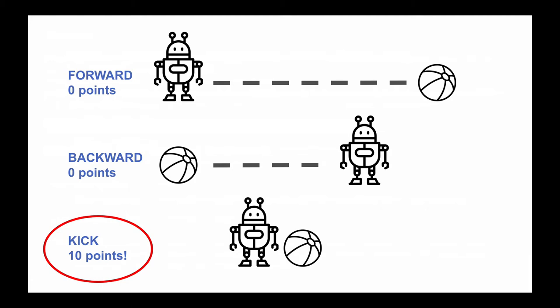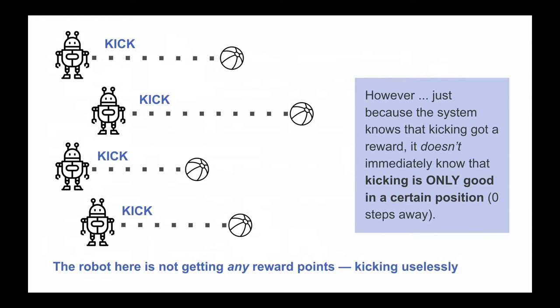The program is not blank or empty when the learning cycle starts. The actions are programmed in, the reward — or maybe multiple rewards — is already programmed in, and the system is already programmed to store information about each state. When a reward is given, for example, at zero steps away the action was kick and the reward was obtained — that is information the system stores in memory. This is like the system remembering what worked. But just because it got it right once doesn't mean it knows that kicking is only good at zero steps away, so it might get stuck in a pattern where it just kicks repeatedly and doesn't move.